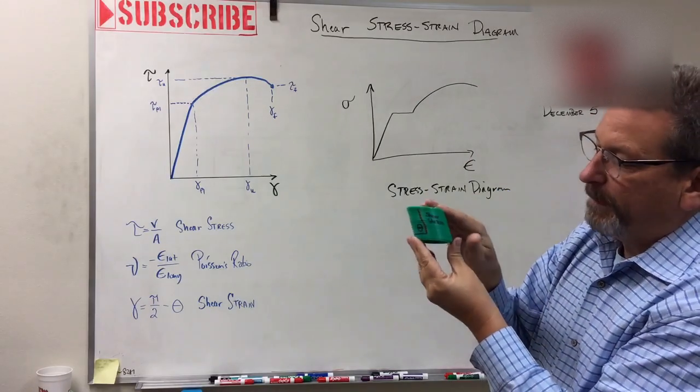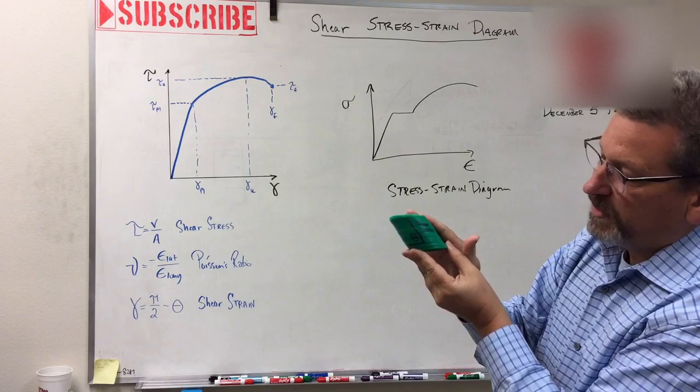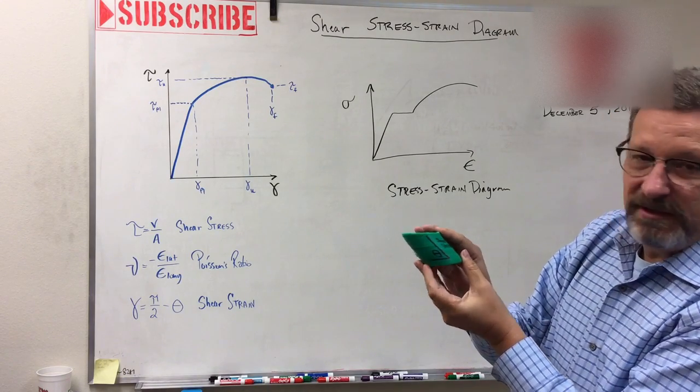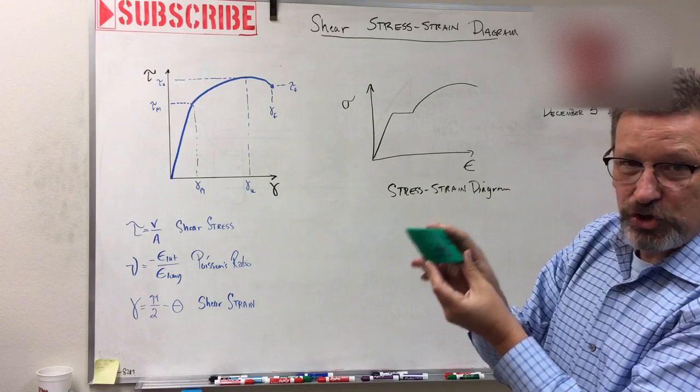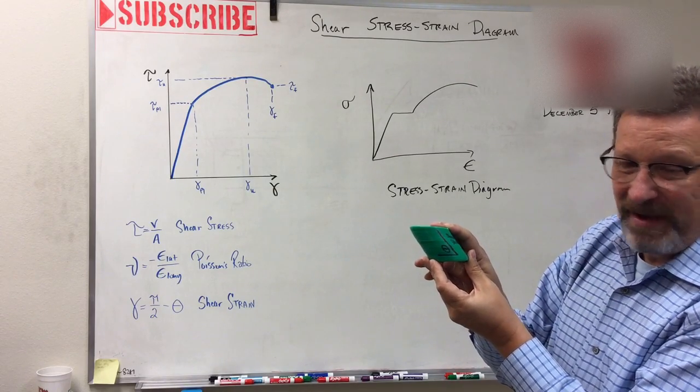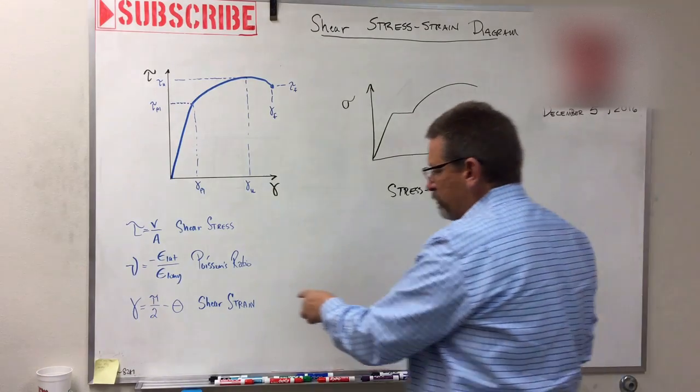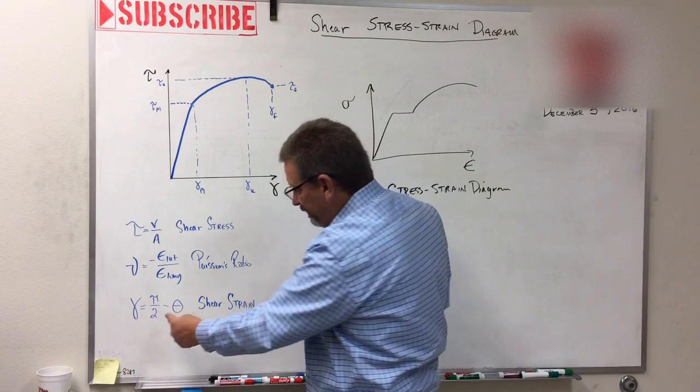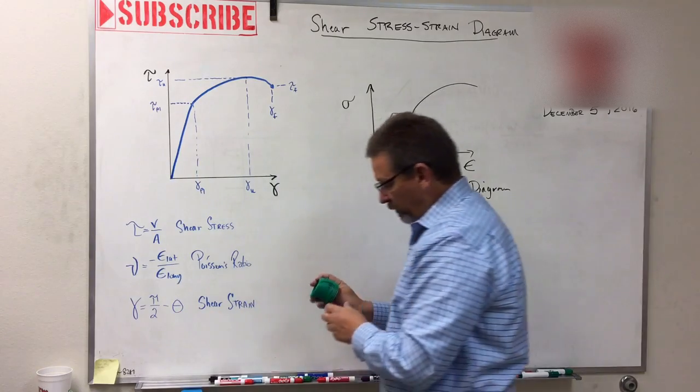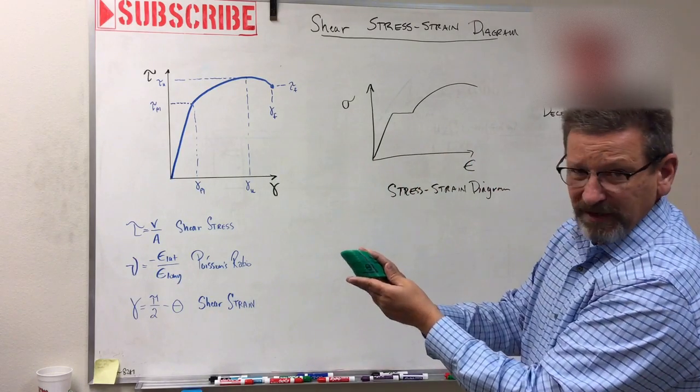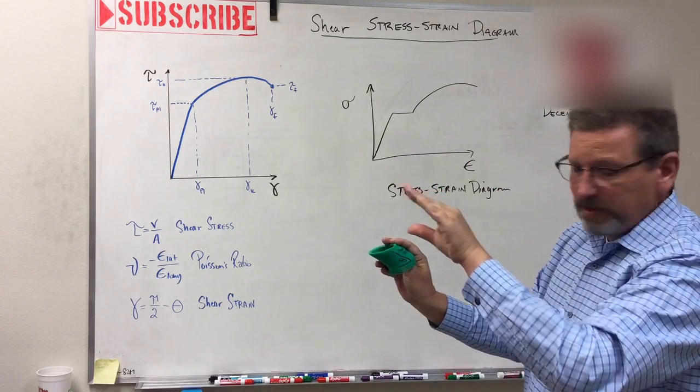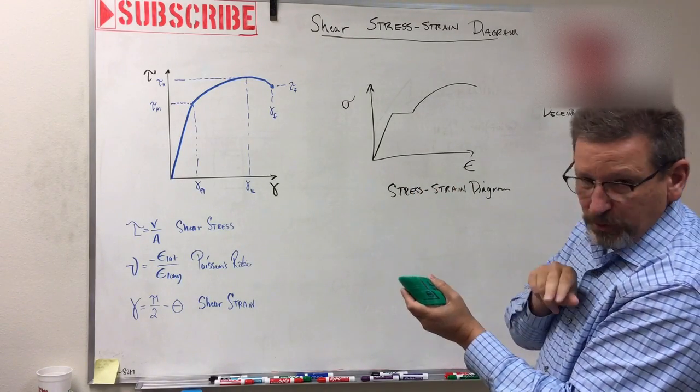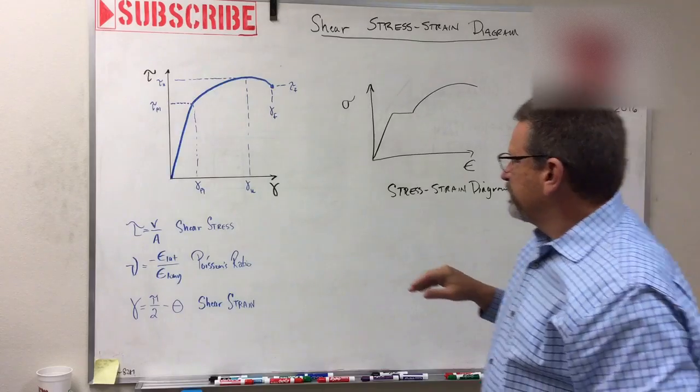Remember, shear's when I have two forces opposing that are trying to tear something. So if I push on the top and pull on the bottom, it deforms. That's shear strain—that deformation. Now remember, shear strain is given by gamma, and it's pi over 2, which is 90 degrees, minus the angle theta. Theta is now smaller, so gamma is the difference between 90 degrees and this new theta here.